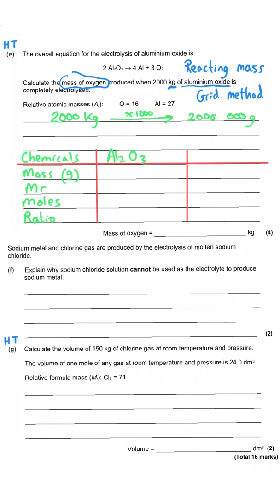Our two chemicals are aluminium oxide — I'll write in the formula — and oxygen gas. I'll jump to the ratio row: the ratio is simply the numbers from the equation, so there's a two in front of aluminium oxide and a three in front of oxygen. That means two moles of aluminium oxide will produce three moles of oxygen. Aluminium metal isn't relevant to us here, so I'll bracket it to show we only care about the aluminium oxide and oxygen.